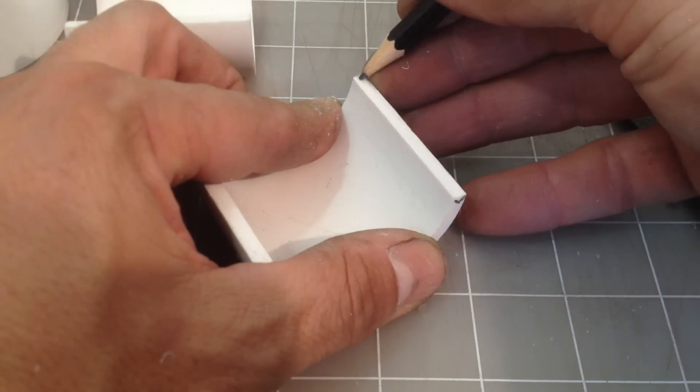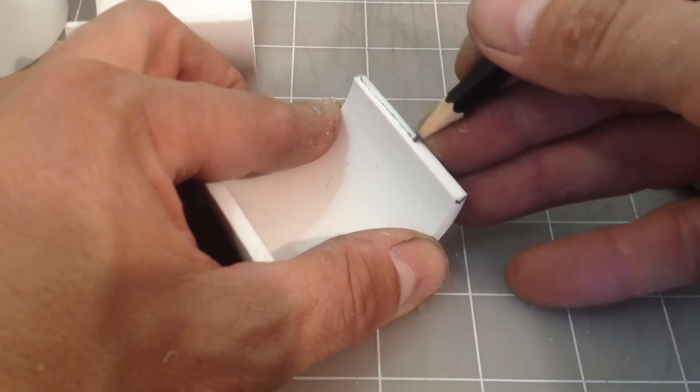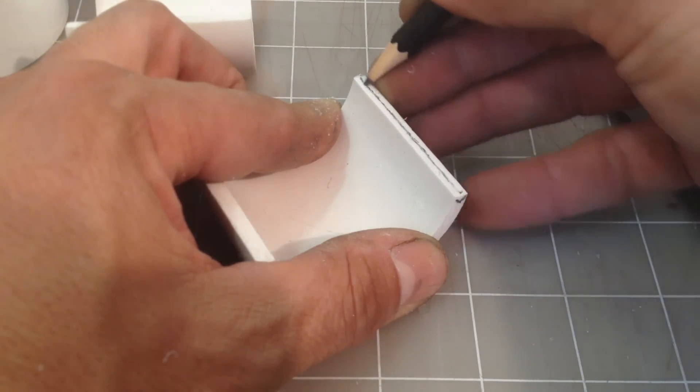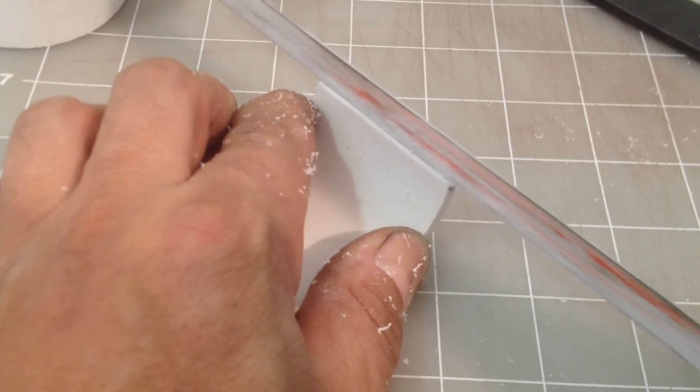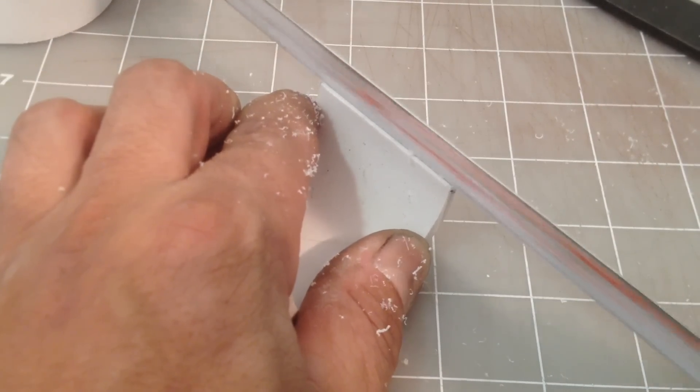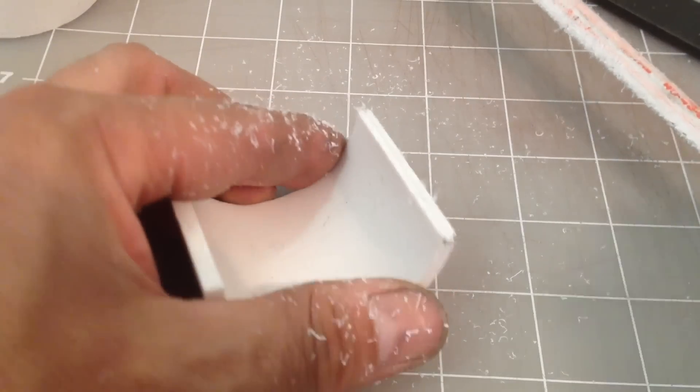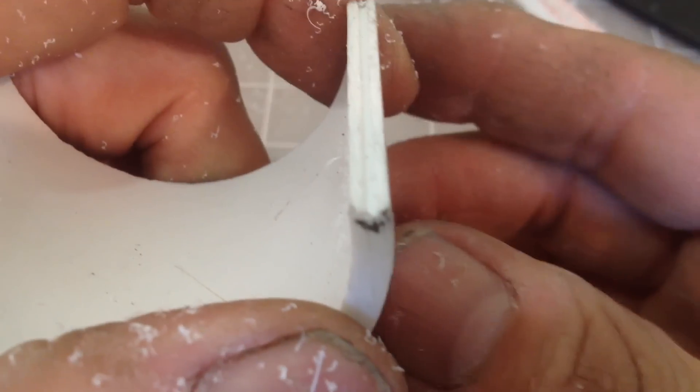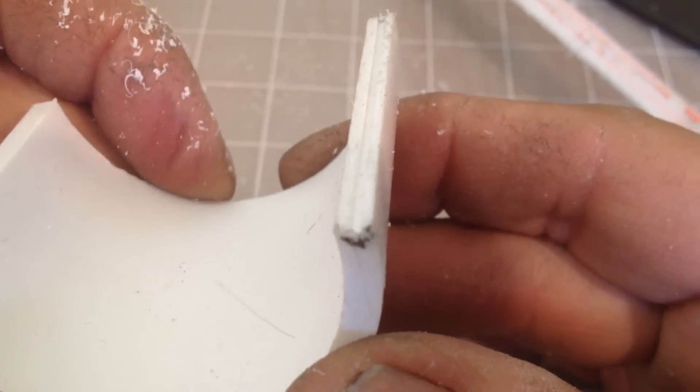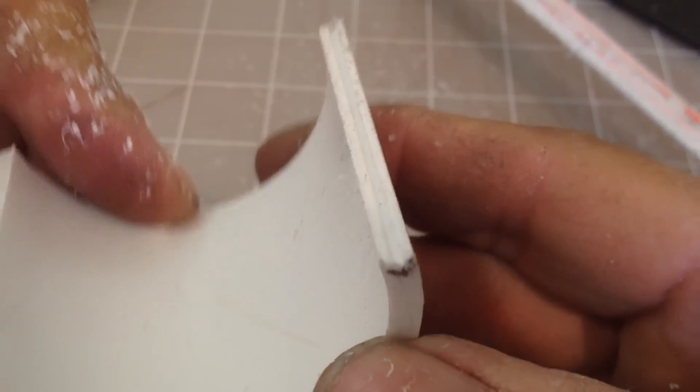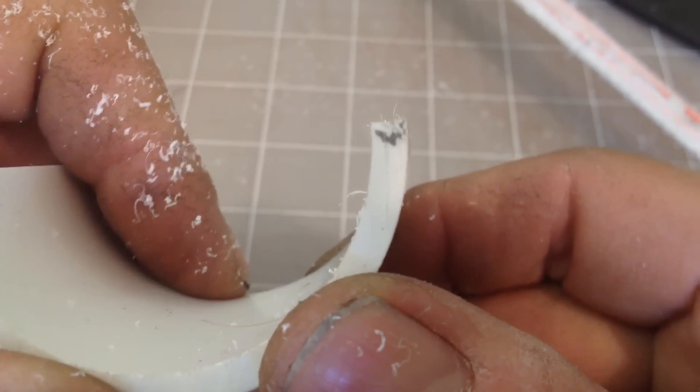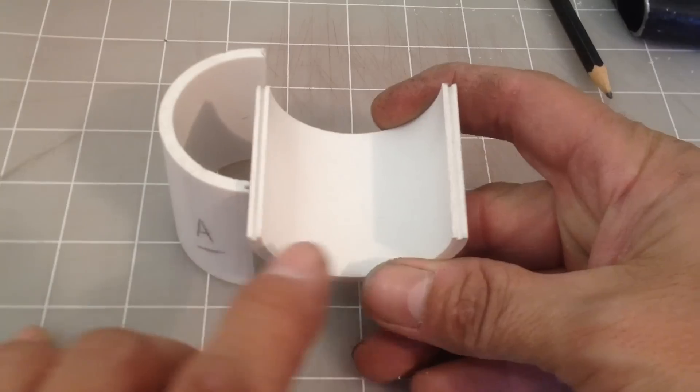Next I draw a center line along the edge of one of the halves. Then I use a hacksaw to carefully cut a channel along the edge approximately 1/16th inch deep. I repeat this process along all 4 edges of the 2 halves.